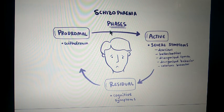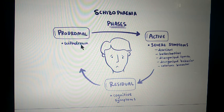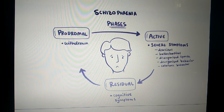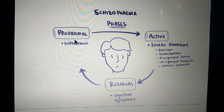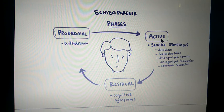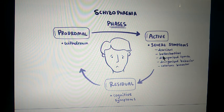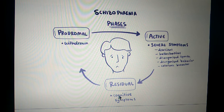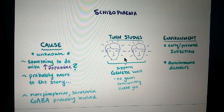Schizophrenia has several phases. The prodromal phase shows withdrawal and only subtle, unnoticeable changes — the person appears mostly normal. The active phase is when all the positive symptoms become apparent. The residual phase shows reduced positive and negative symptoms, leaving mainly cognitive symptoms that hinder the learning process, before potentially cycling back to the prodromal phase.